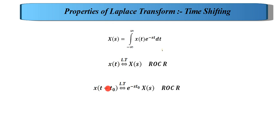A time shifted version of x(t) is represented by x(t - t0), and its transform can be written as e^(-s*t0) multiplied by X(s), with the ROC remaining the same as before. Here t0 is the time shifting value. This is a very simple but very useful property that you need to remember when solving problems.